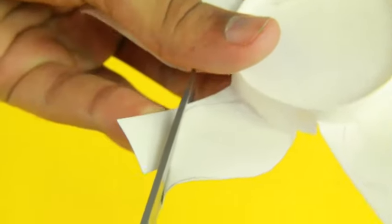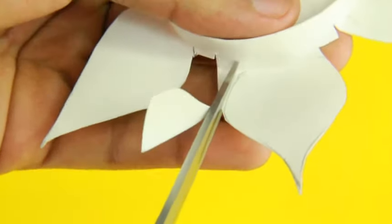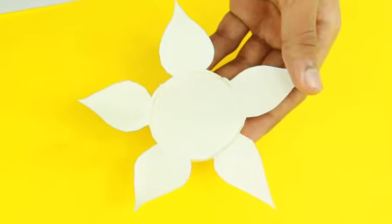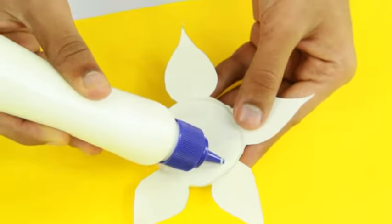Don't throw the scraps. You will use these to make leaves. Now apply glue and paste it on the sheet.